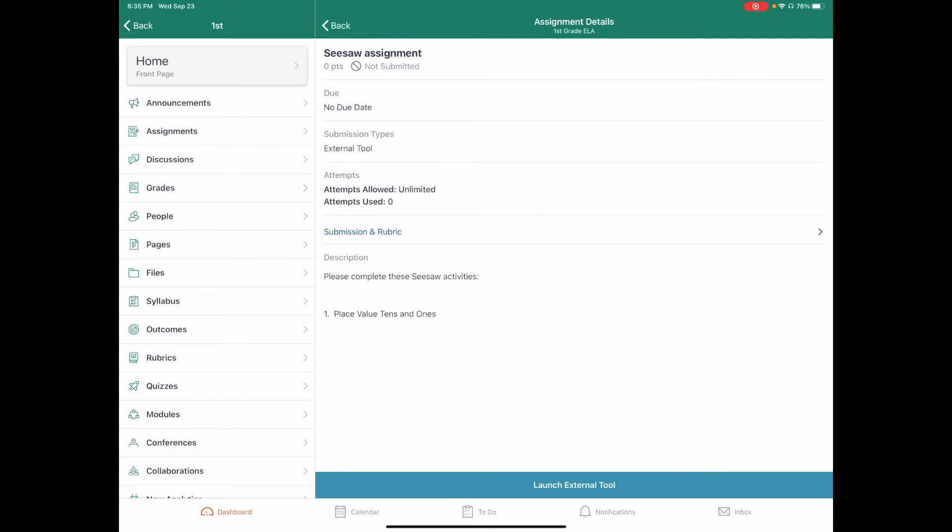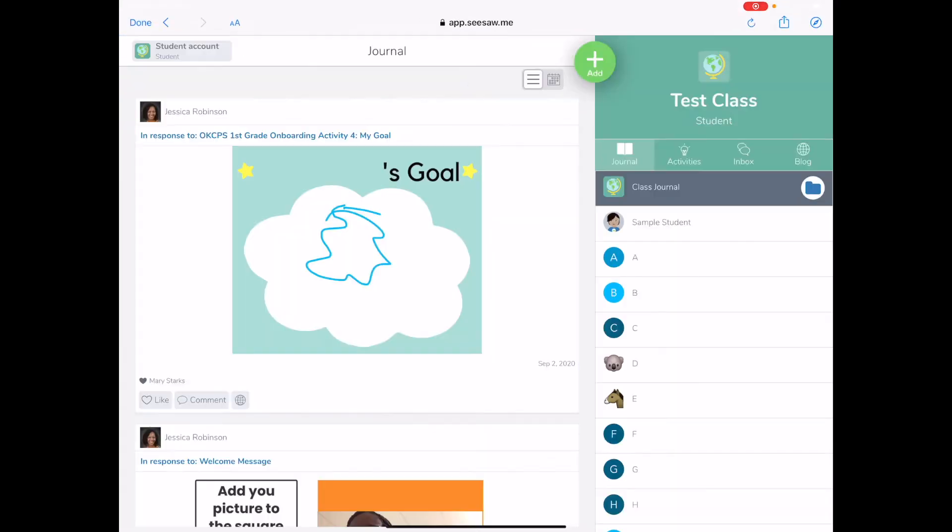So at the bottom of my Seesaw assignment details, I see that this is going to launch an external tool. I want to press that launch external tool, and it opens up my Seesaw.